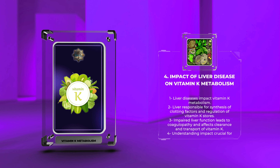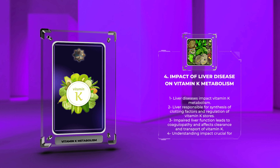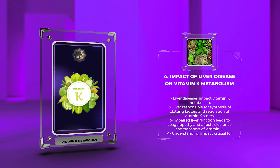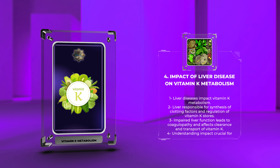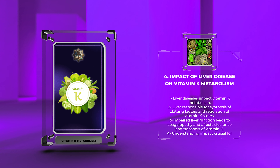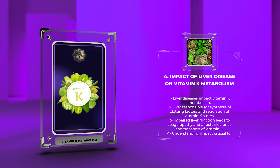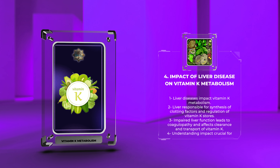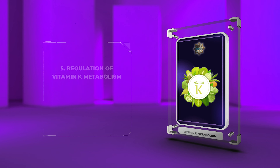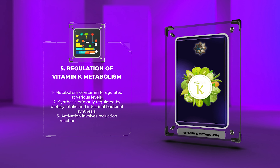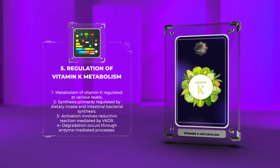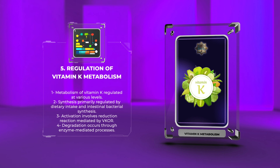The vitamin K-dependent carboxylase is a vital enzyme involved in the gamma-carboxylation of glutamate residues within GLA proteins. This enzyme requires the presence of vitamin K-hydroquinone and acts in the lumen of the ER. It catalyzes the addition of a carboxyl group to specific glutamate residues, converting them into gamma-carboxyglutamate residues. The carboxylation process is essential for the proper functioning of vitamin K-dependent proteins, as it enables their calcium-binding ability, thereby facilitating their role in blood coagulation and calcium metabolism.